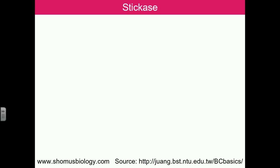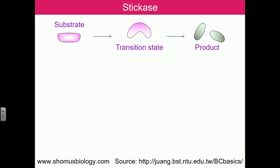Let's talk about enzyme catalysis and the different ways an enzyme catalyzes and converts its substrate into the product. Stickase, which is a hypothetical enzyme, is a very good example of how all these interactions of substrate and enzyme take place. The substrate comes in, the enzyme also provides the transition state of the substrate, which is modified a little bit, influenced by the presence of the enzyme, and then finally it is converted into the product.